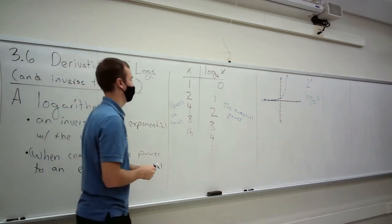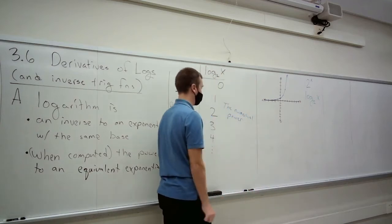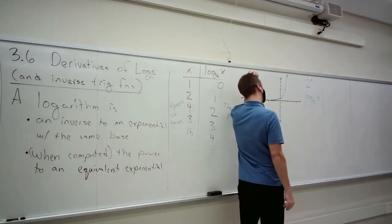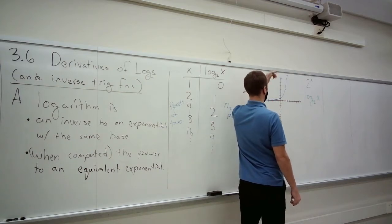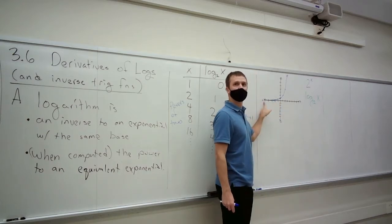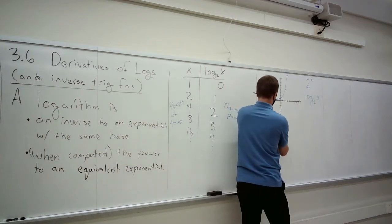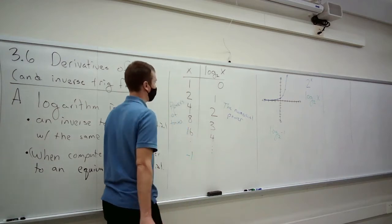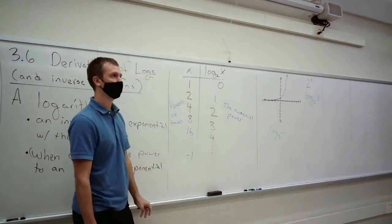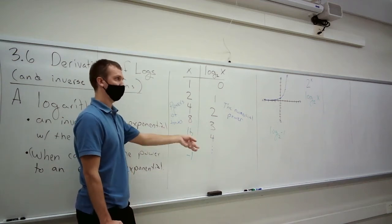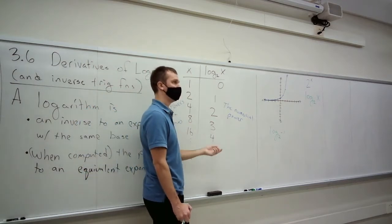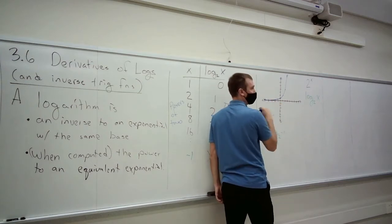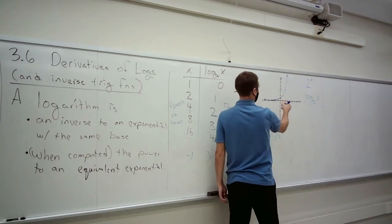That means the limit as x goes to negative infinity of 2 to the x is 0. The logarithm tells us the power of our input. Is there any way we can plug in negatives? What's the log base 2 of negative 1? We have to ask: is negative 1 on the list? We've got a positive number raised to some power — can we ever get a negative out? No. So the logarithm is not defined for any negative number. There's not going to be anything graphed to the left of the y-axis for the logarithm.